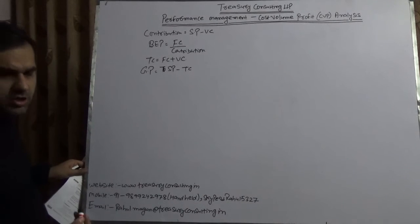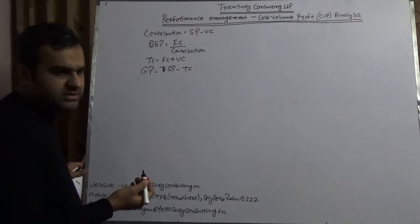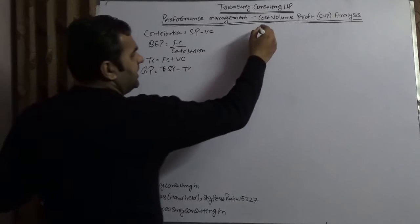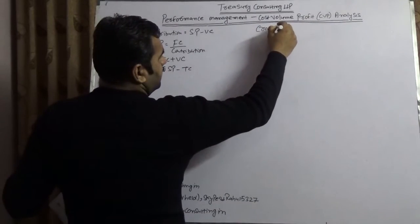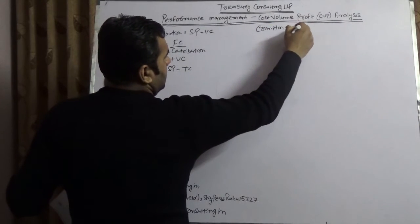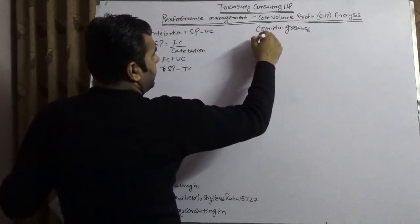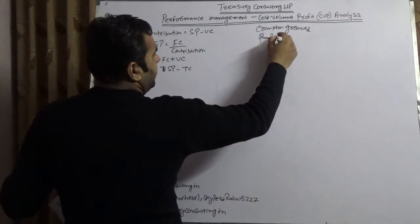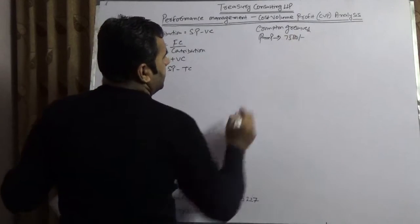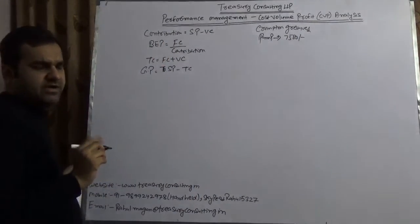This is divided into two parts. Assuming Crompton Greaves is making a pump and the pump price is $7,500, so the selling price is $7,500.